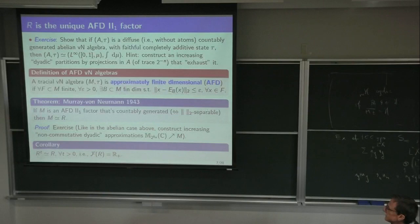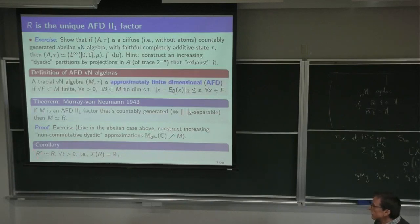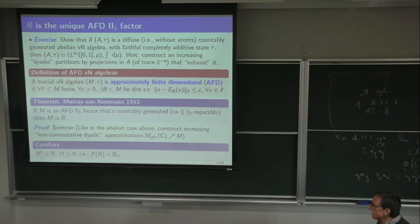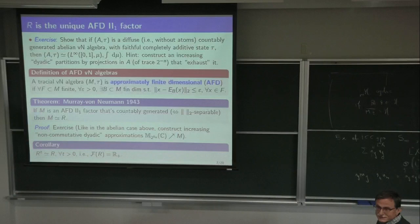A very clear corollary: R^t — the amplifications of R — are obviously AFD by the definition of R and by matrices. And also, when you cut with a projection, it's clear. So from these two together: R^t is AFD for any t, therefore R^t is isomorphic to R for any t. That means the fundamental group of R is ℝ₊.